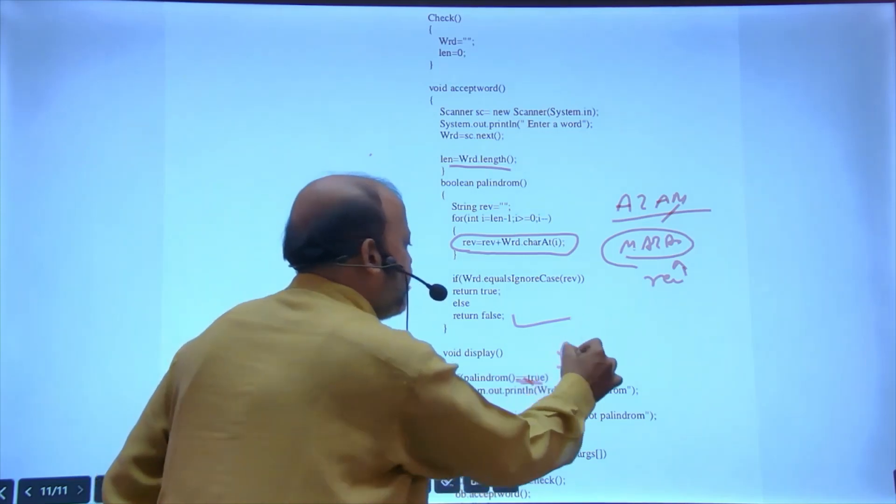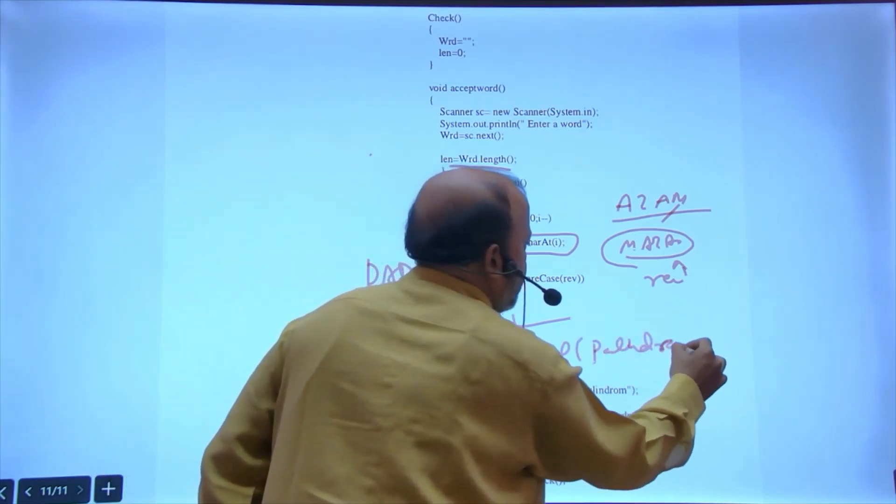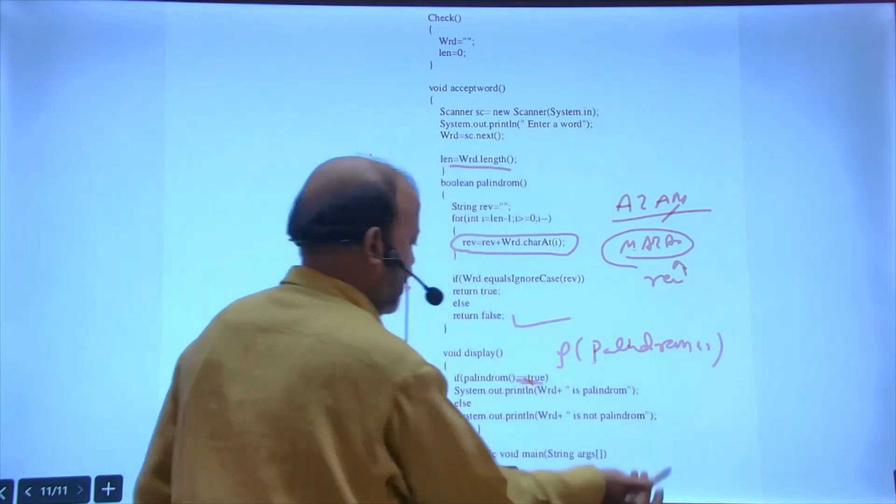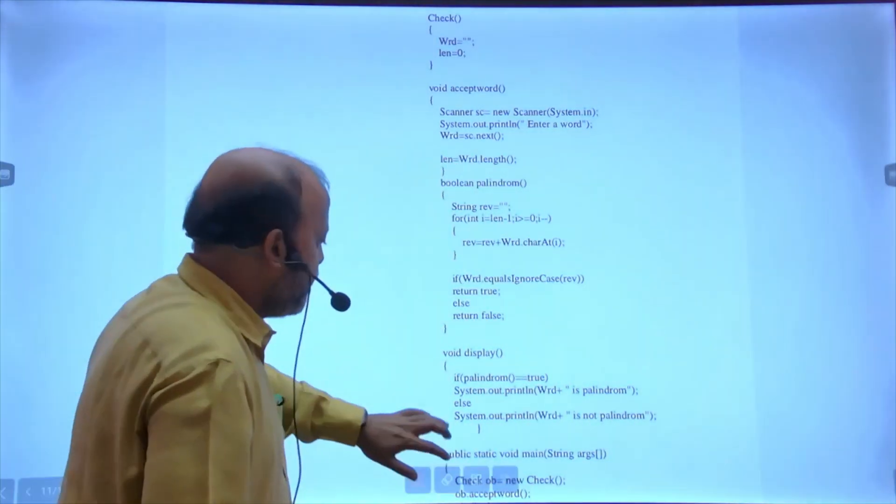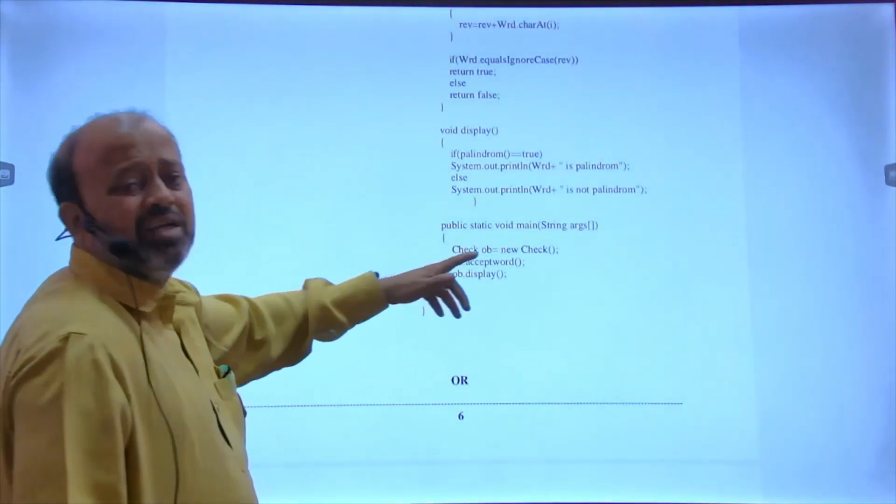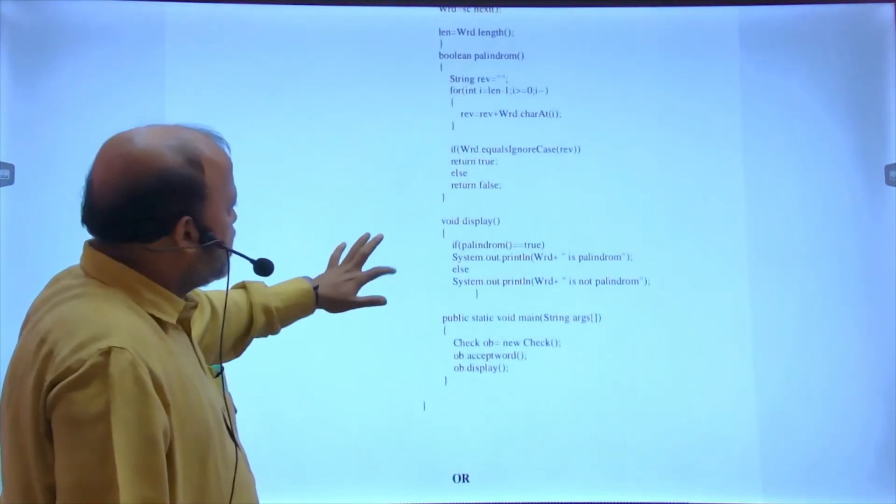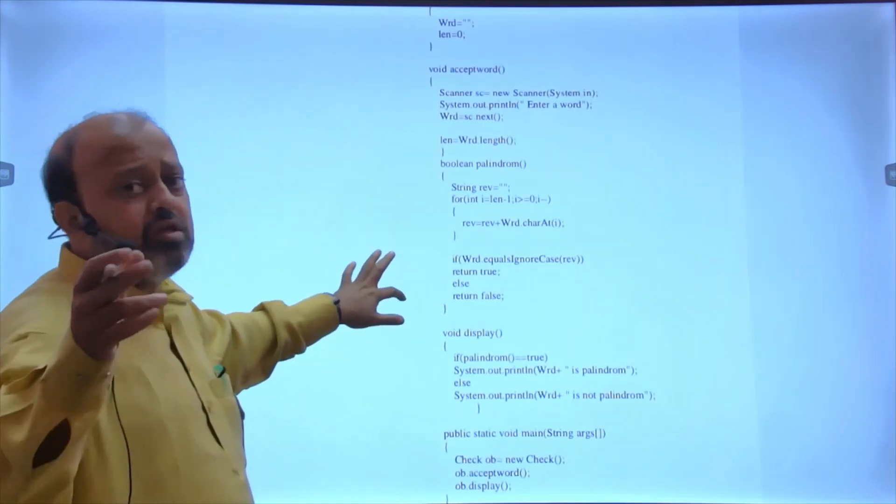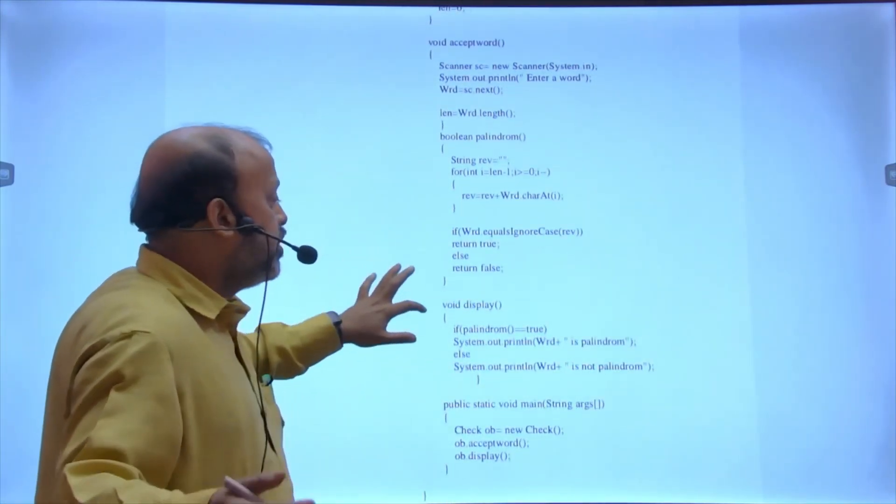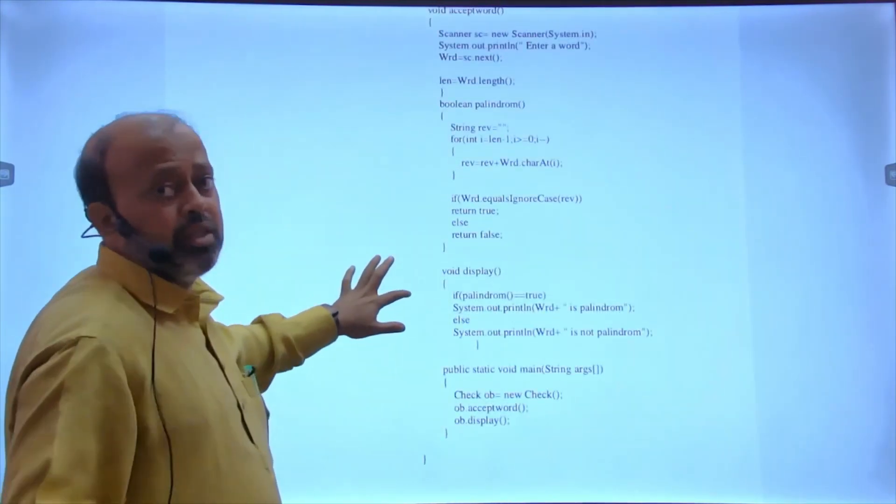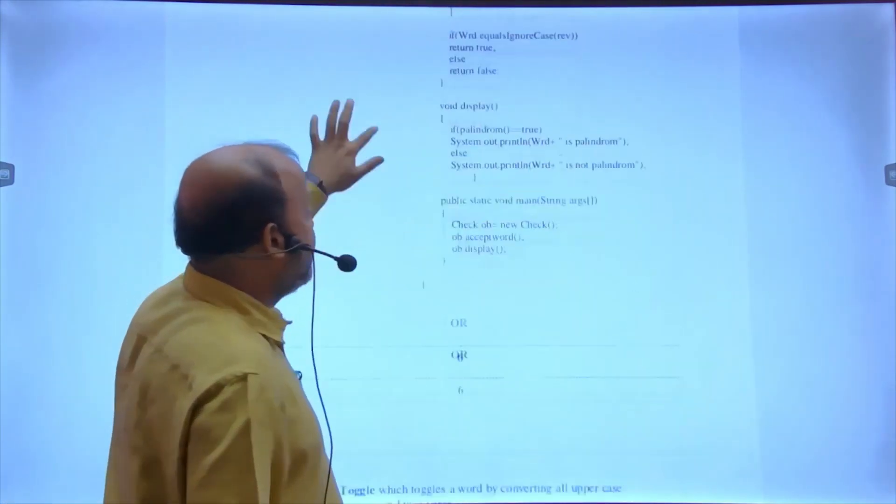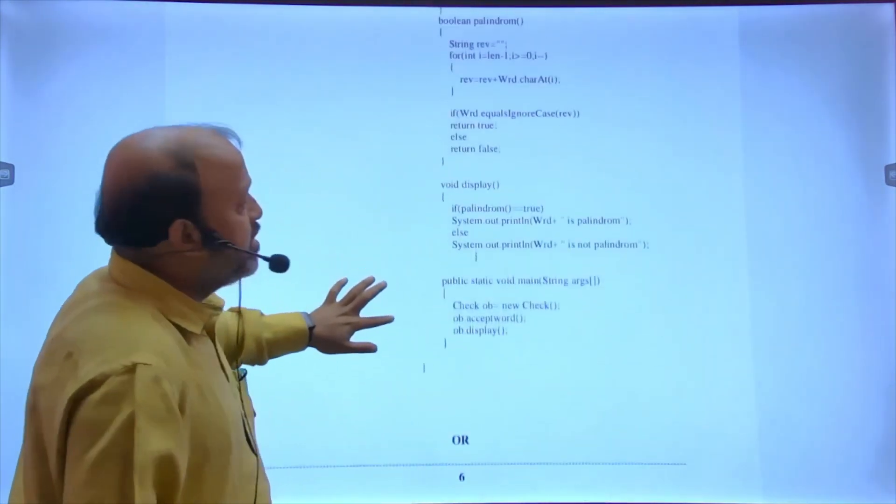Taking the loop from reverse len minus 1, len is already calculated in accept. Word and then forming a new reverse. Normally I give my example: my name is Azam. If you reverse my name you'll get from M, A, Z, A. This is the value of rev. Now Azam and rev are not equal, so you'll get false. But in case if you give 'dad' or 'mom', you'll get true. So this function returns true or false.